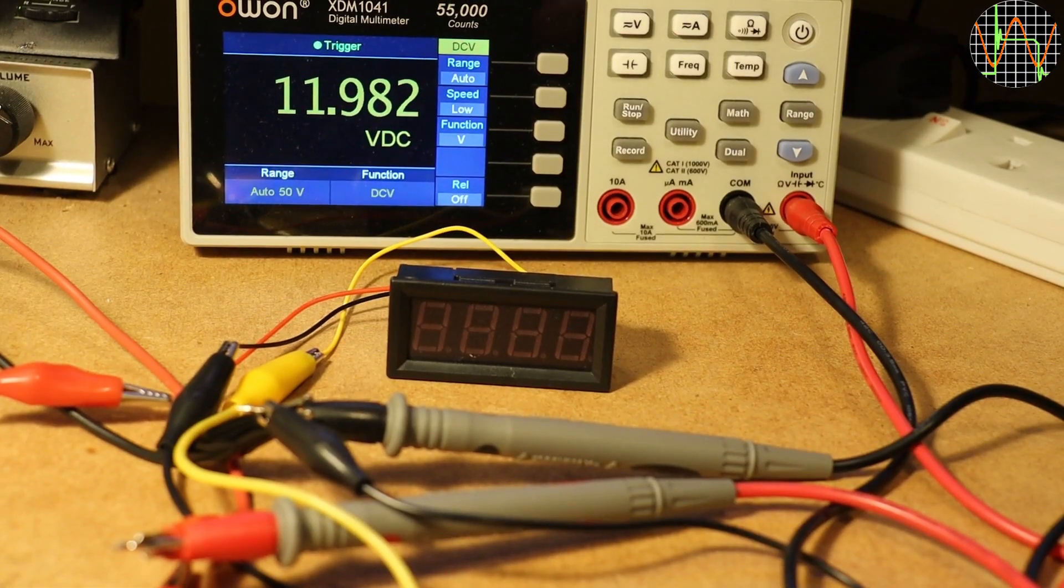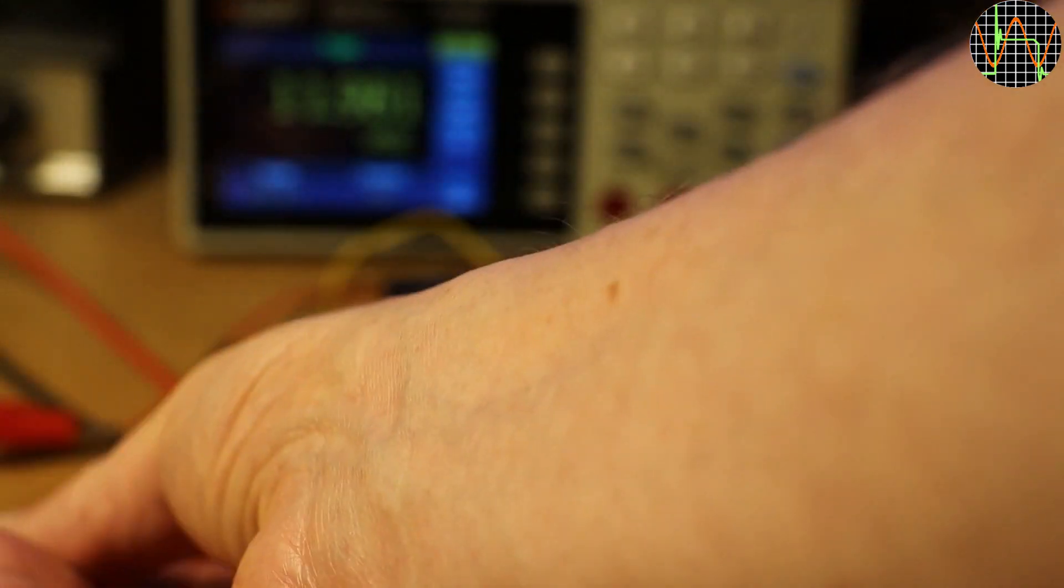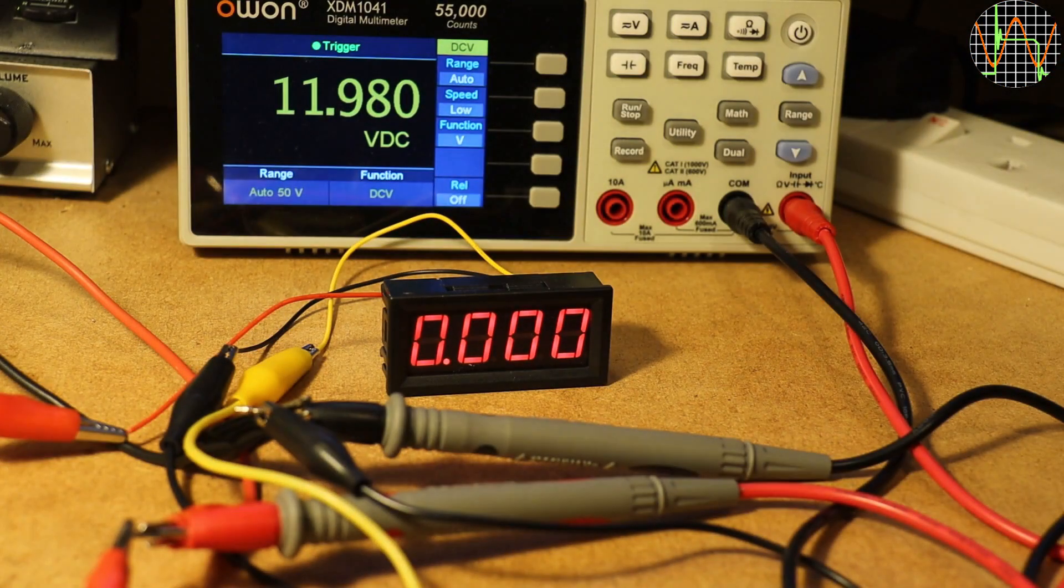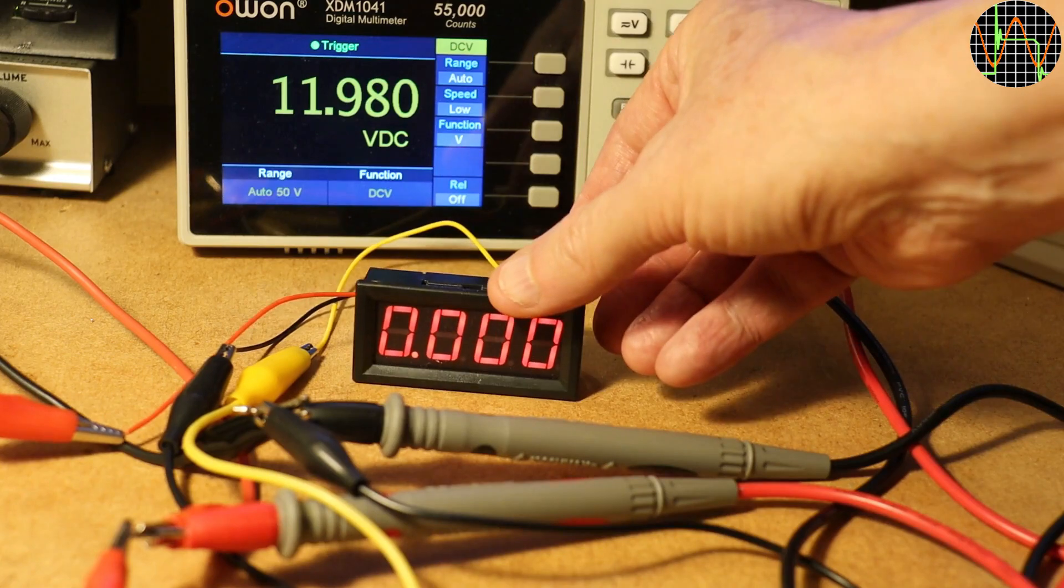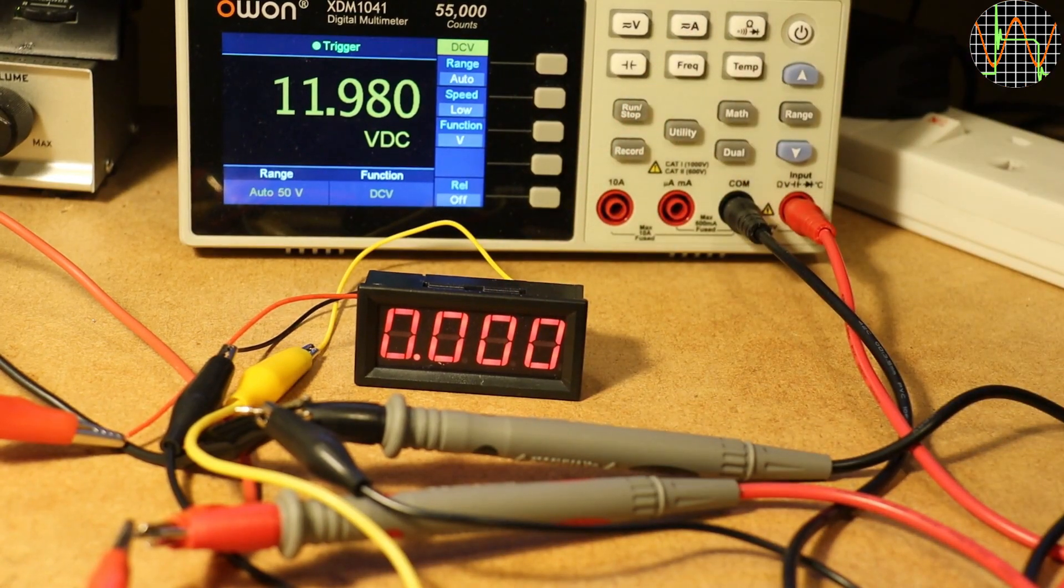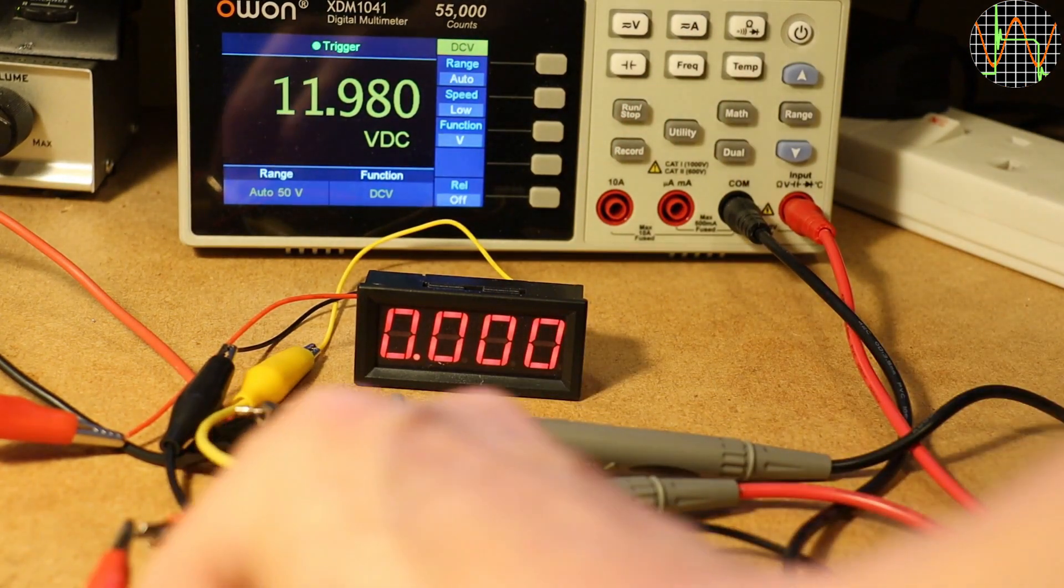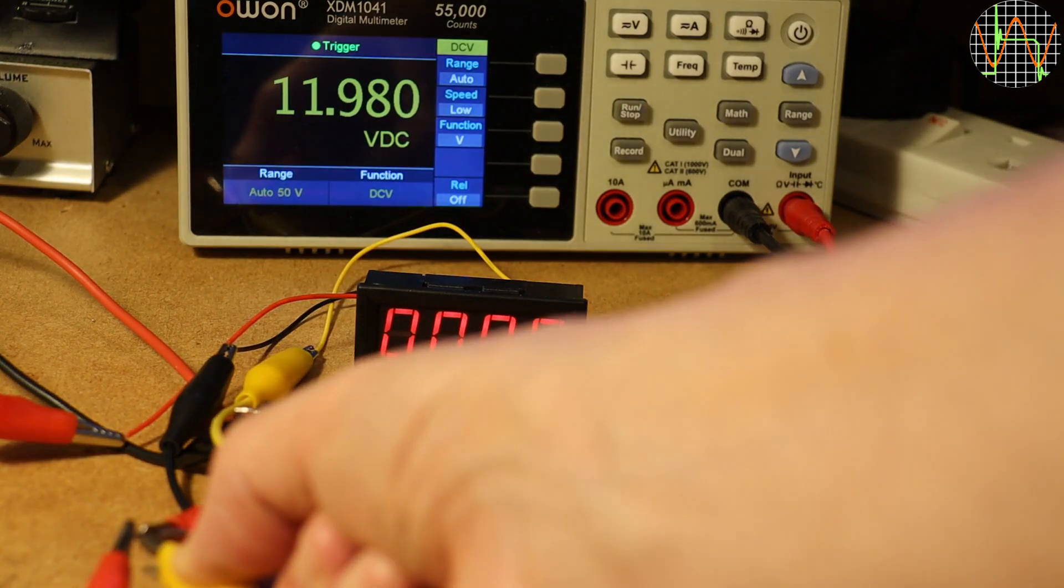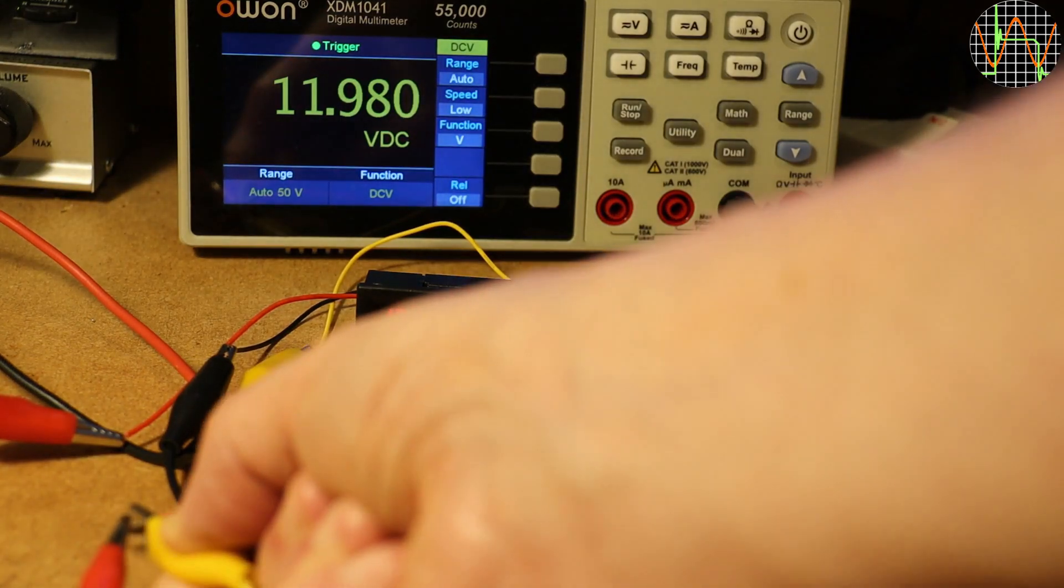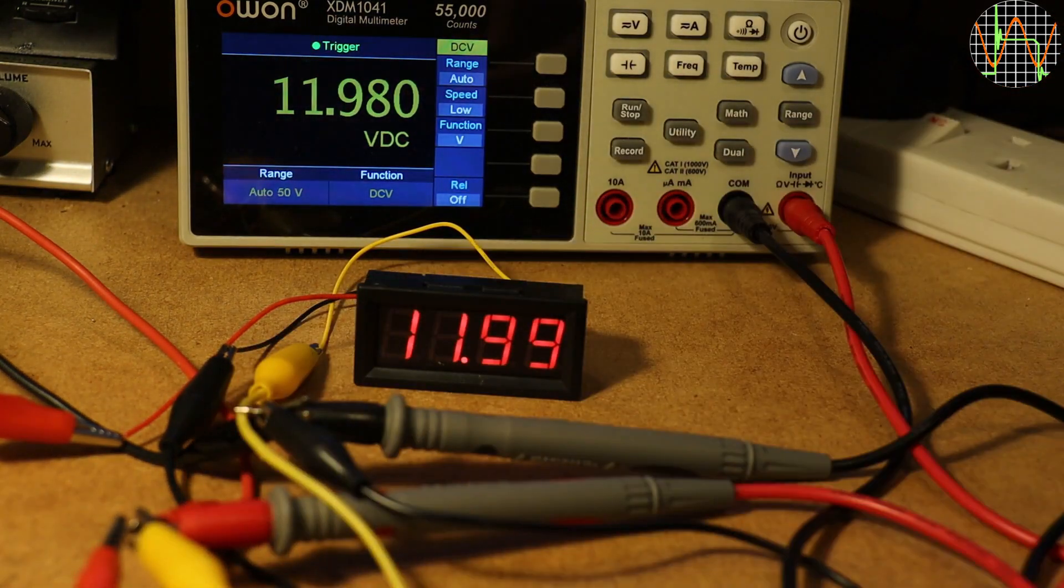When using a voltage like 12V, a 3-wire type meter will spring to life when black is connected to ground and red to 12V, but it will show just 0. As soon as the yellow wire is connected to the red wire, it shows the voltage which is close to 12V.